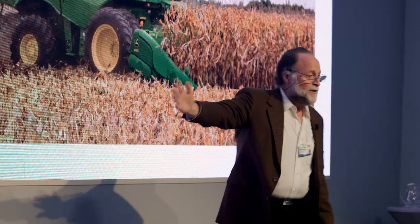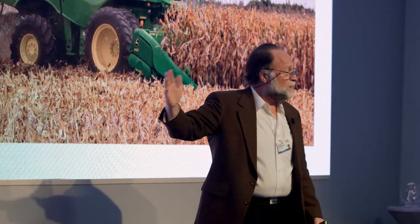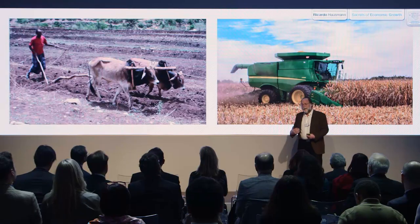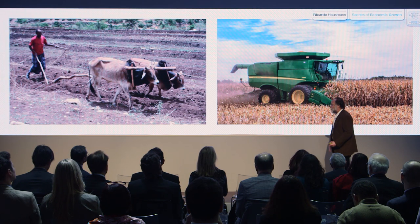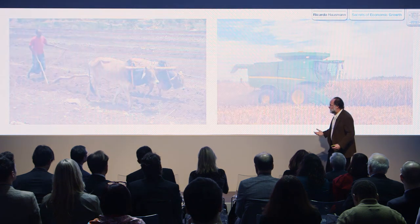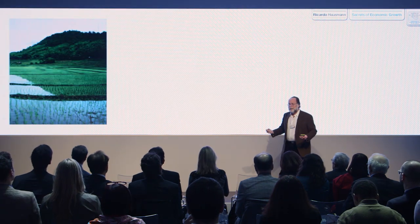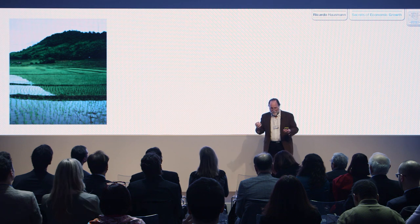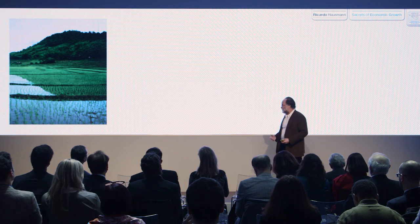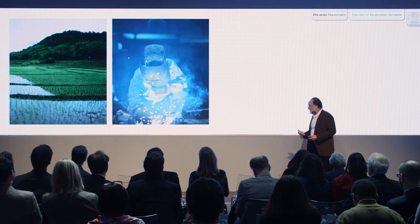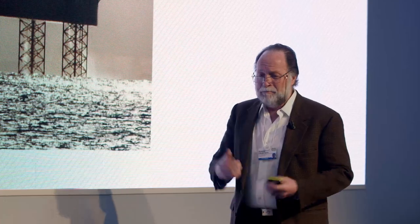What underpins these humongous differences in productivity per worker? Economists have had theories about what that might be. And those theories typically involve the availability of assets, factors of production, like land, labor, capital, human capital.